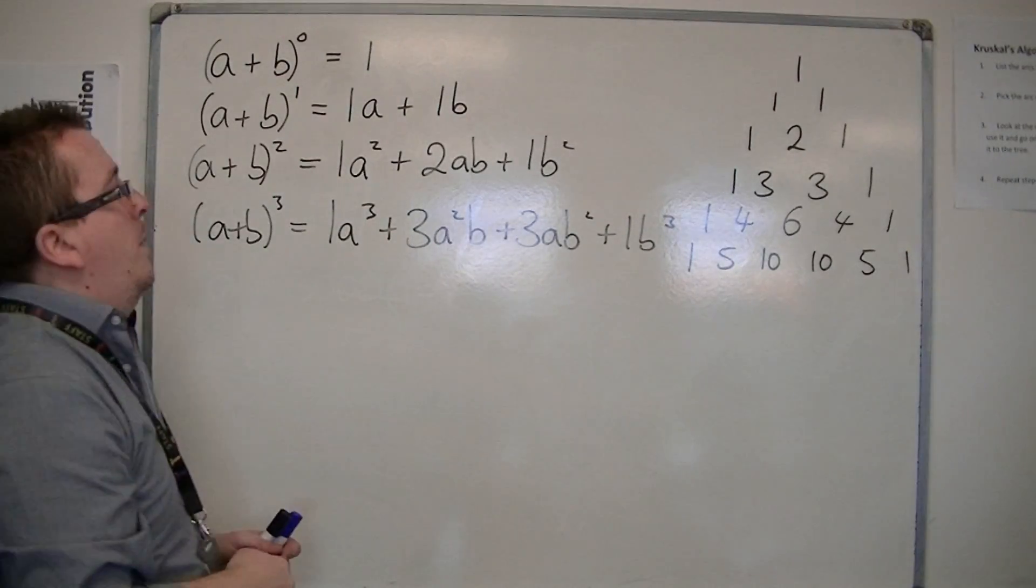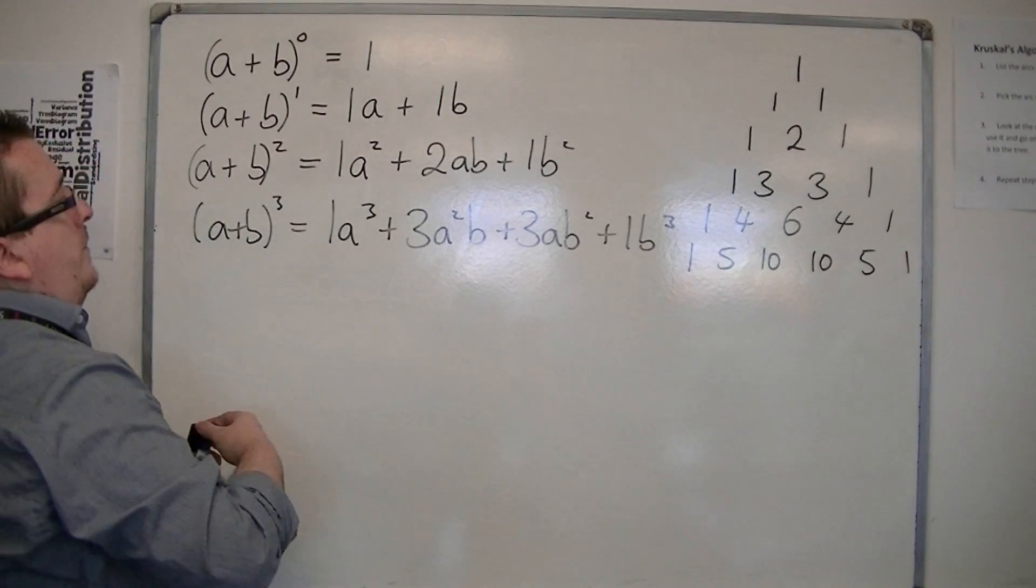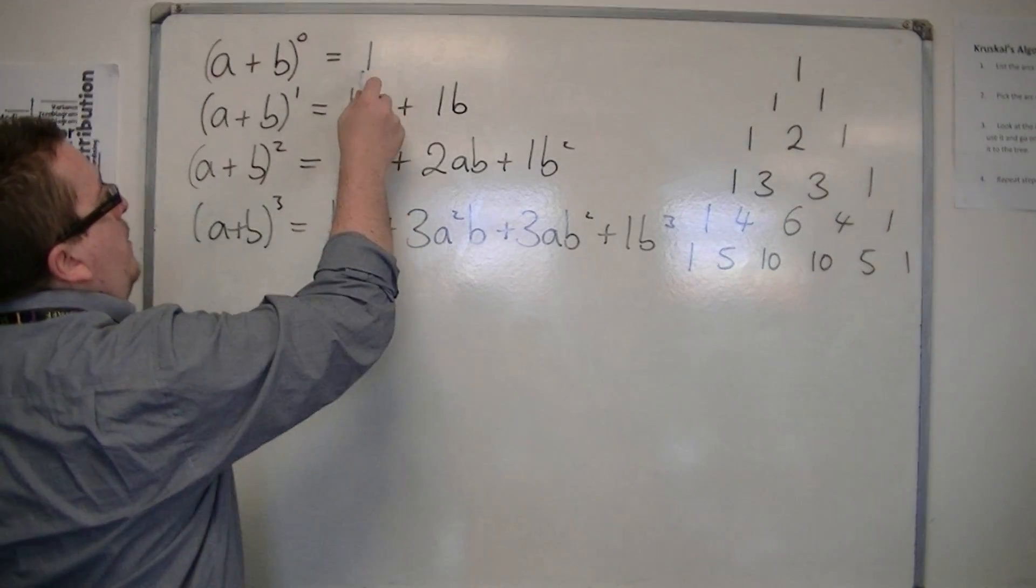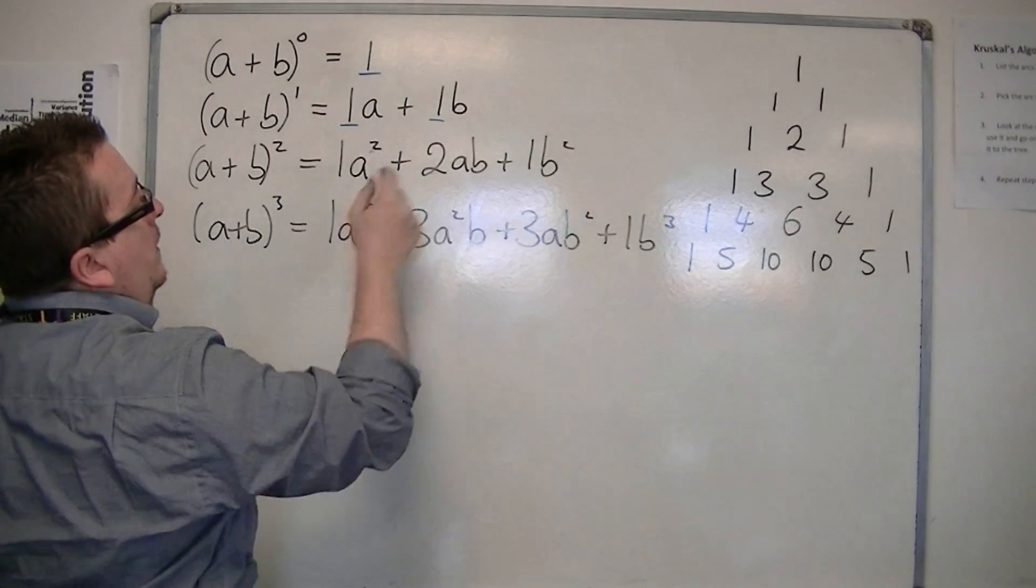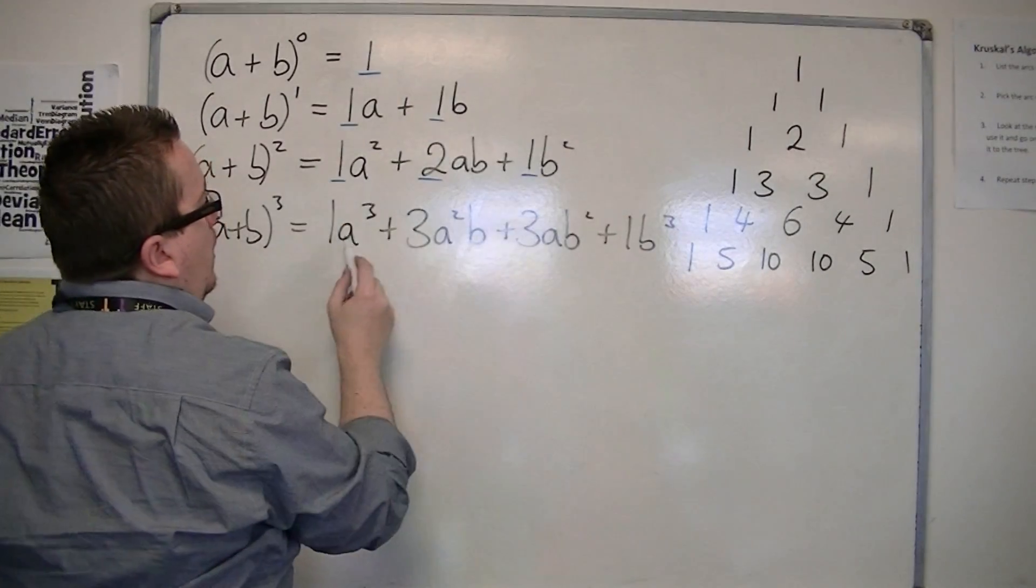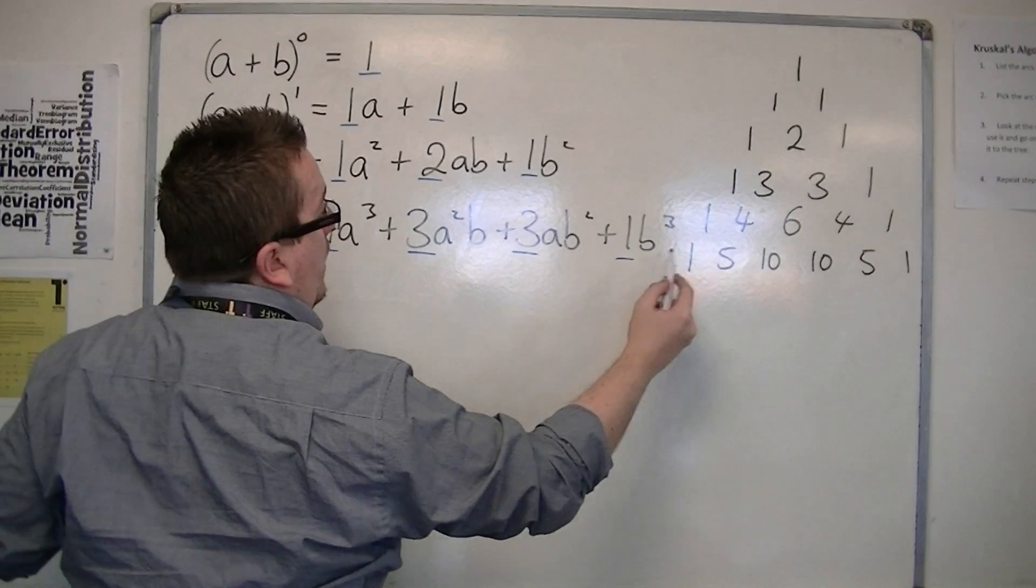So in actual fact, you might now be seeing that this is Pascal's Triangle—the coefficients of Pascal's Triangle: 1, 1, 1; 1, 2, 1; 1, 3, 3, 1. So the next one we would expect to incorporate using these coefficients.